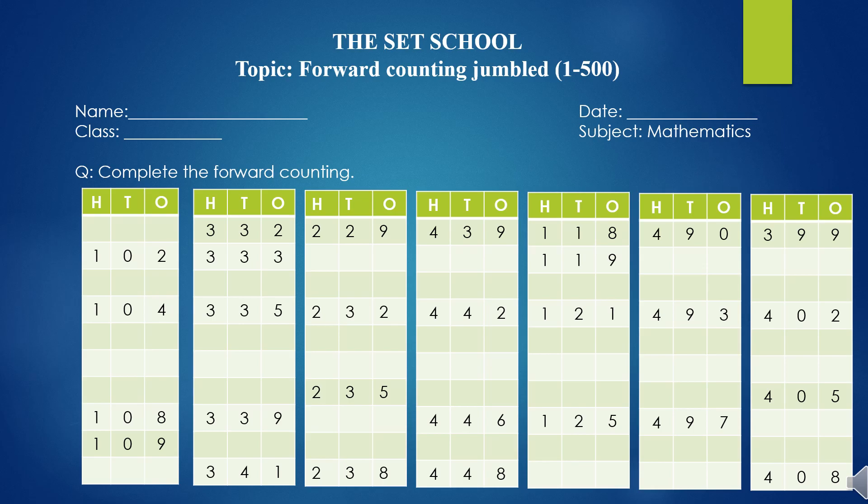Now it's time to do an activity. In this activity, you have to complete the forward counting jumbled. In this activity sheet, you have different series of forward counting, and you have to complete each series by yourself. But there is a question: where do you have to do it? You have to do this in your rough copies with your pencils. You can do it with the help of your pencils, and you have to do your work in good handwriting as well. You also have to keep your copy safe so that I can give you good remarks. Do you want super bravo? If you want it, you have to do your work in good handwriting and keep your copy safe.